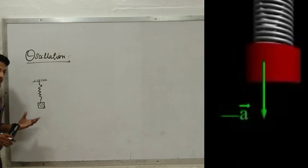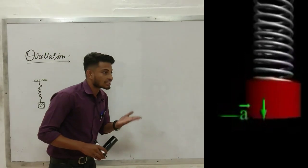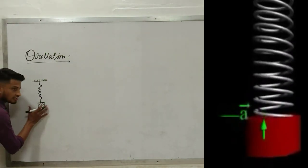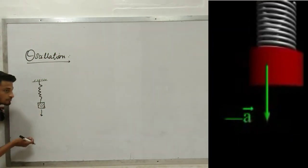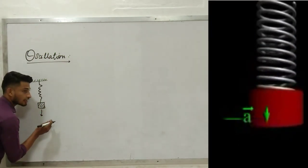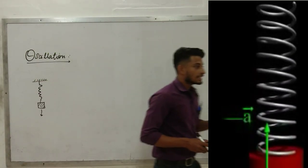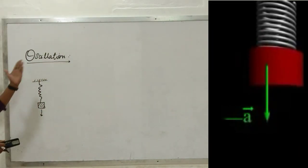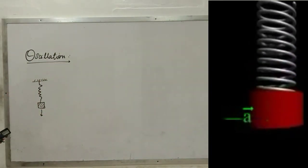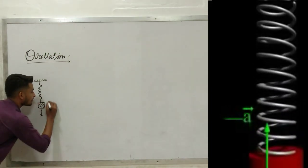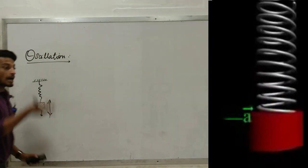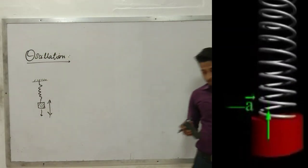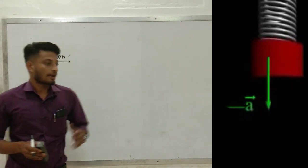When you pull the spring, what happens? This is due to restoring force. Restoring force supports the oscillation. If you have oscillation, the object goes up and down. Oscillation may be to and fro or up and down.